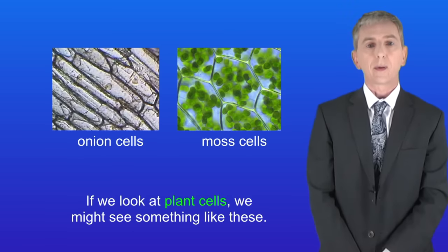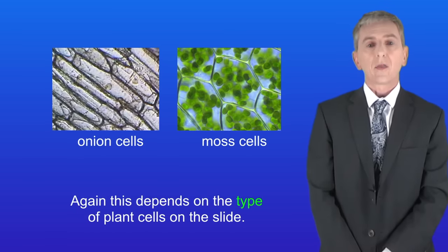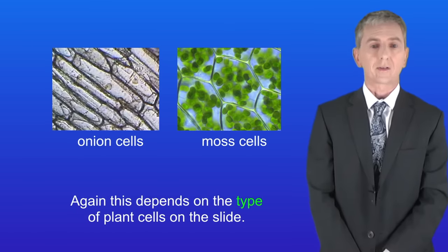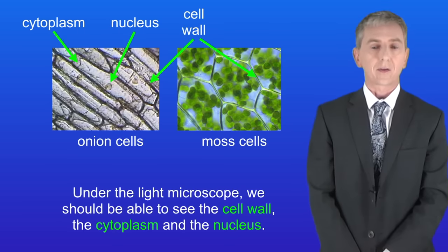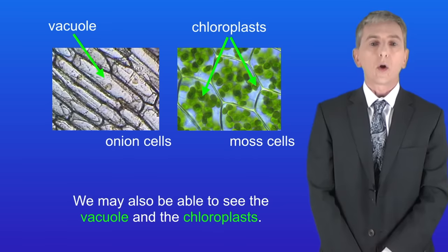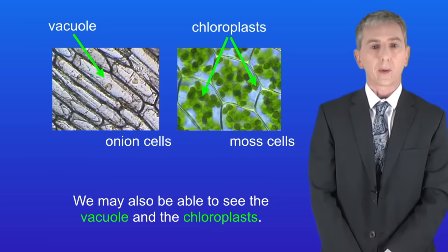If we look at plant cells we might see something like these, but again this depends on the type of plant cells on the slide. Under the light microscope we should be able to see the cell wall, the cytoplasm and the nucleus. We may also be able to see the vacuole and the chloroplasts.